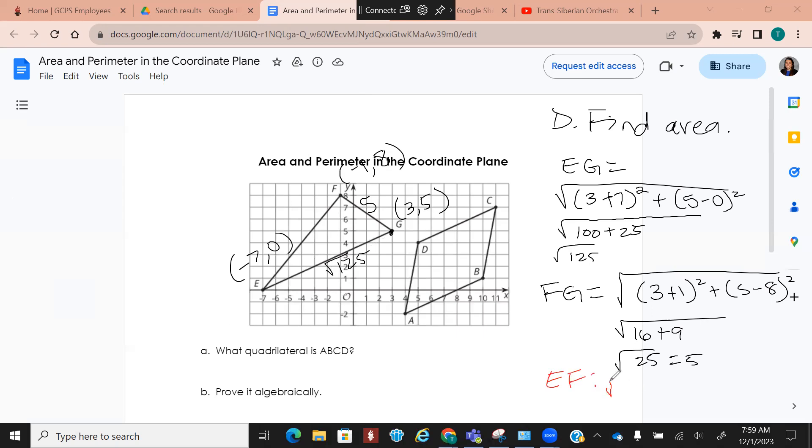All right. And then EF. So, that's going to give me negative 1 minus negative 7 squared, plus 8 minus 0 squared. So, that's going to give me 6 squared, which is 36, 8 squared, which is 64. And that's the square root of 100, which is 10. Okay. So, all I've done is I found the distance.